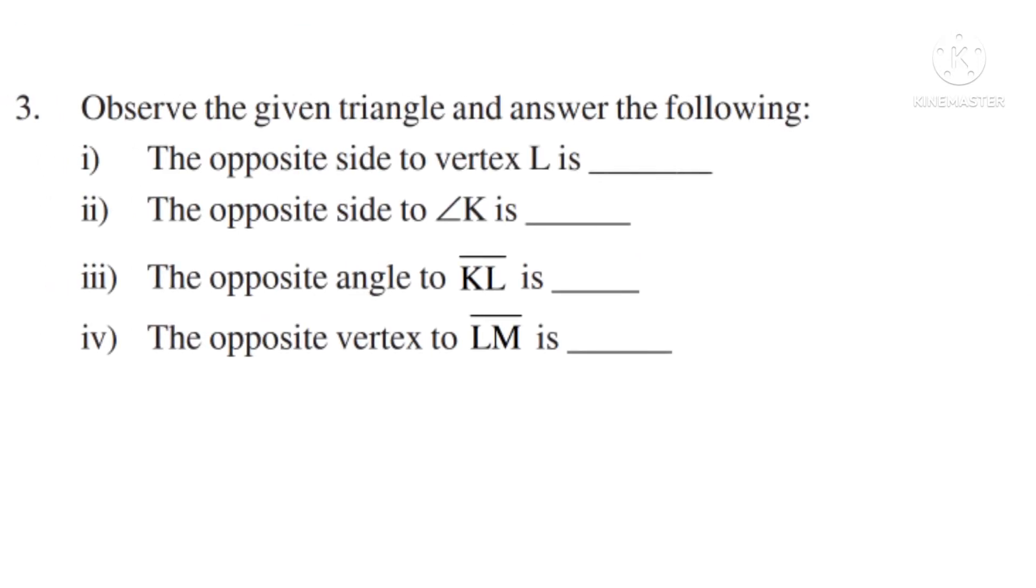Now third problem. Observe the given triangle and answer the following. Number 1. The opposite side to vertex L is. See the vertex L in the figure and opposite to it is the side KM.